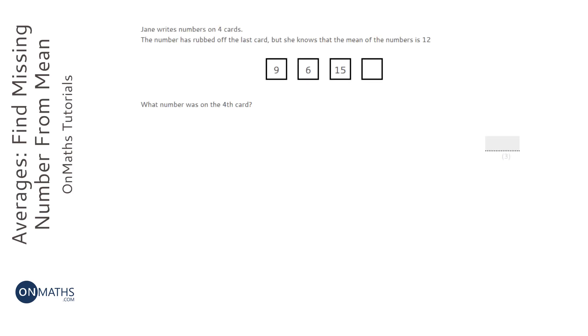Okay, so for this question, we've basically got the mean of the numbers. We know what three of them are, but we don't know what the fourth one is because the number's rubbed off.